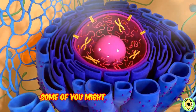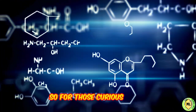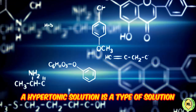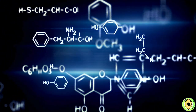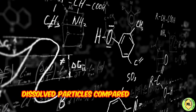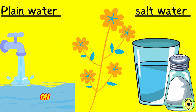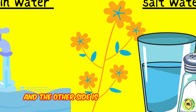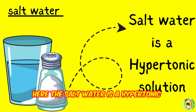Some of you might be wondering: what is a hypertonic solution? For those curious heads, a hypertonic solution is a type of solution that has a higher concentration of solutes — dissolved particles — compared to another solution. In simpler terms, suppose you are a tiny flower. On one side of you is salt water, and the other side is plain, normal water. Here, the salt water is a hypertonic solution.